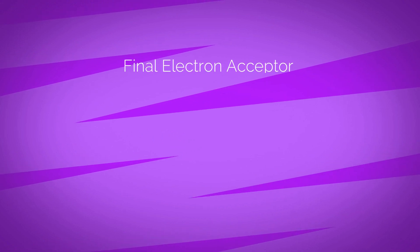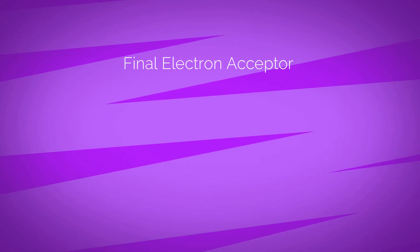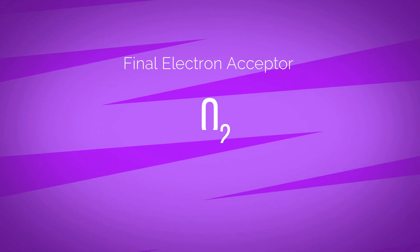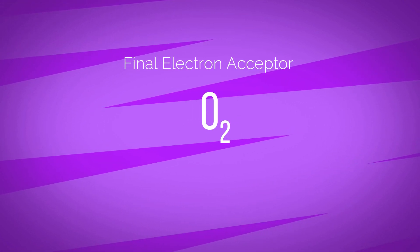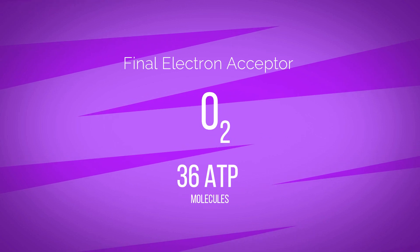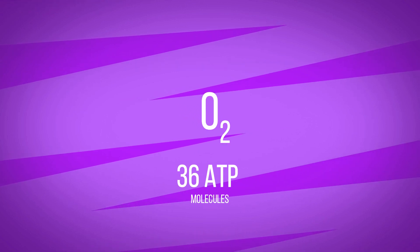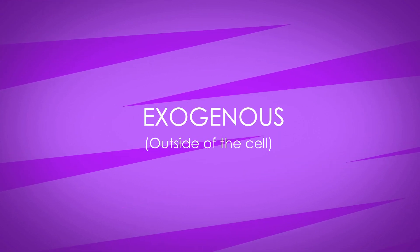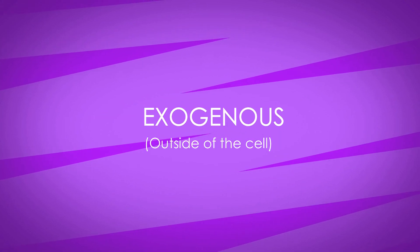In aerobic respiration, the final electron acceptor is oxygen and produces 36 ADP molecules. The final electron acceptor is exogenous in nature.